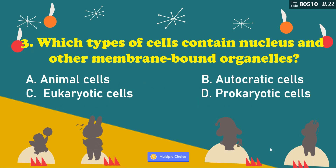Number 3: Which type of cells contain nucleus and other membrane-bound organelles? A, animal cells; B, autocratic cells; C, eukaryotic cells; D, prokaryotic cells. That's also correct — it's letter C, eukaryotic cells.